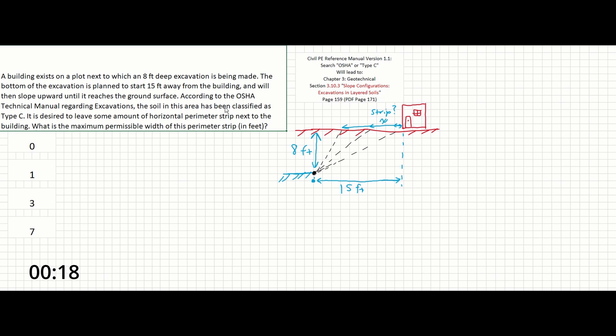According to the OSHA Technical Manual regarding excavations, the soil in this area has been classified as Type C. It is desired to leave some amount of horizontal perimeter strip next to the building. What is the maximum permissible width of this perimeter strip in feet?